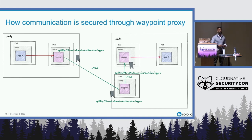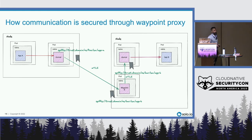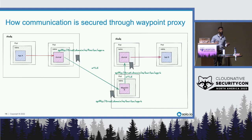When I want to implement layer 7 authorization policies, I have to deploy a waypoint proxy. That means deploying a gateway API resource specifically for the waypoint proxy for the destination workload I'm trying to communicate towards, and then creating my layer 7 authorization policy. For example: App A can only make HTTP GET requests towards App B, but not DELETE requests. When that policy is in effect, the Z-tunnel on the source encrypts using MTLS towards the waypoint proxy, which derives the identity of the destination workload, then tunnels to the Z-tunnel on the destination node, which decrypts the traffic and directs it to the final workload.